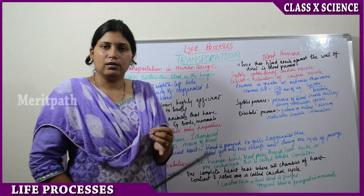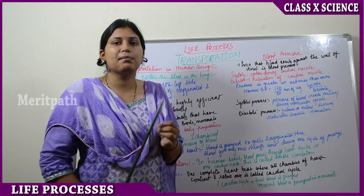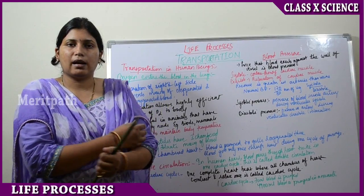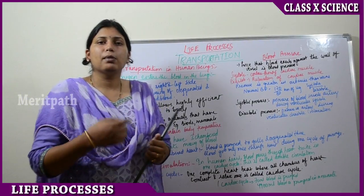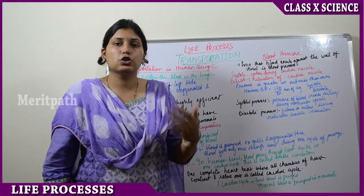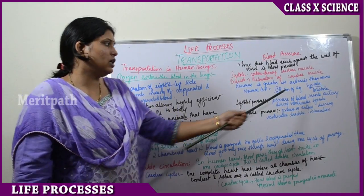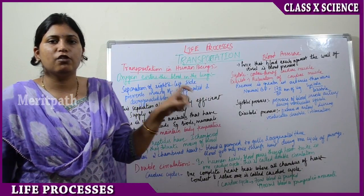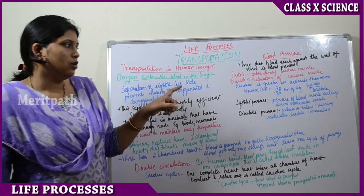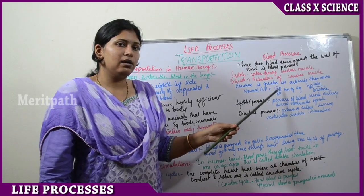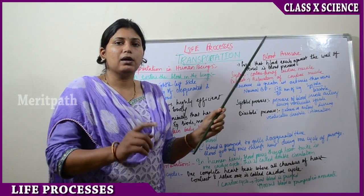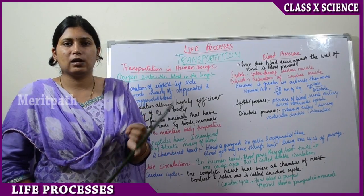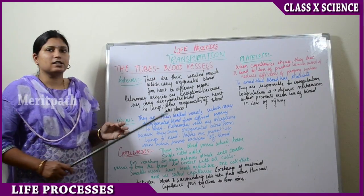A sphygmomanometer is a device which measures blood pressure. There is a hand cuff which is tied around the arm, and the sphygmomanometer has mercury readings. Hg is the chemical formula of mercury, which is present in the sphygmomanometer and indicates the blood pressure level.